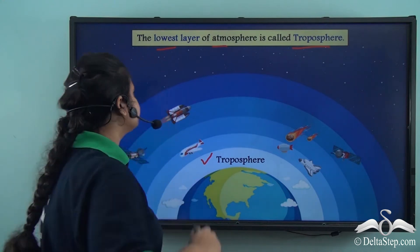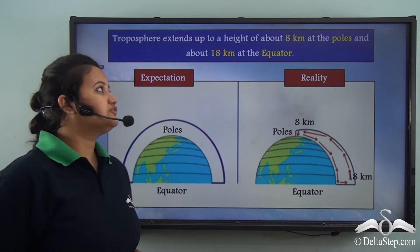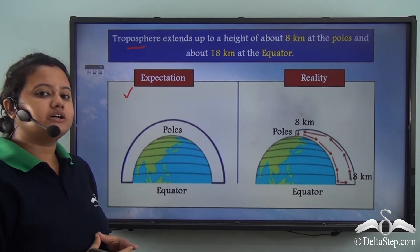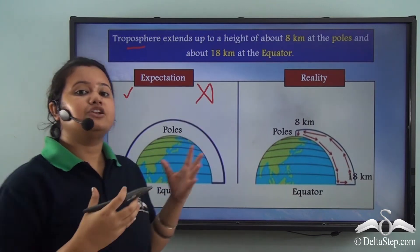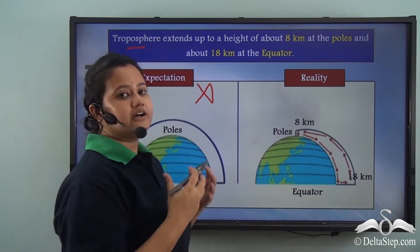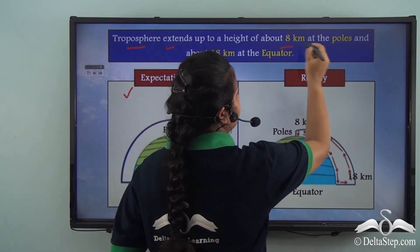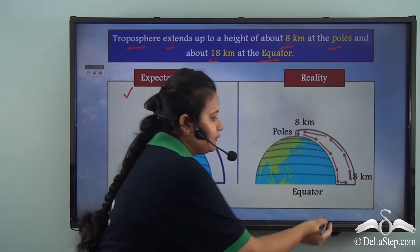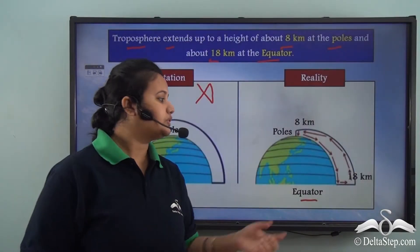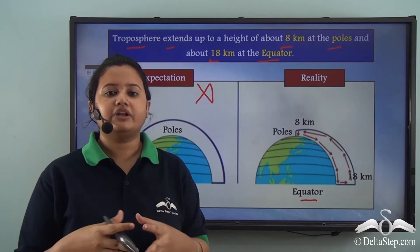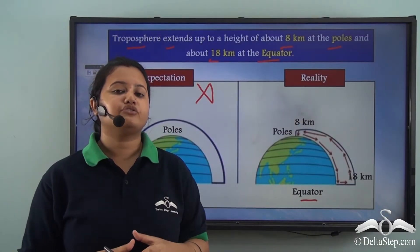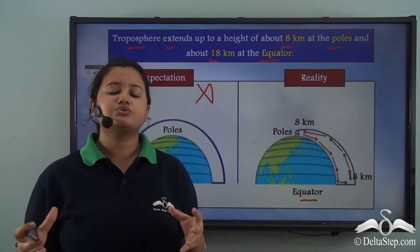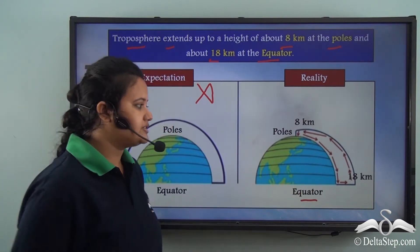The troposphere does not extend uniformly above the earth's surface. In reality, the extension of troposphere varies: it extends up to a height of 8 km at the poles and 18 km at the equator. This is because the equatorial region is quite hot, so air gets heated, expands, and rises up, while cold air from upper layers sinks down, setting up convectional currents.